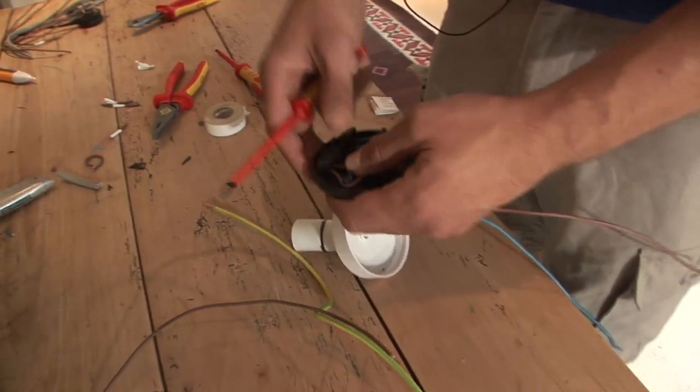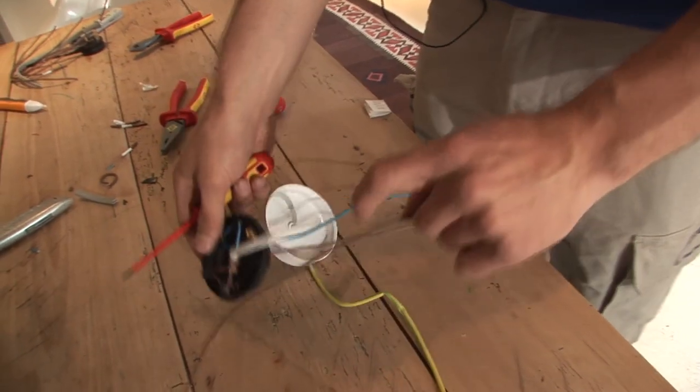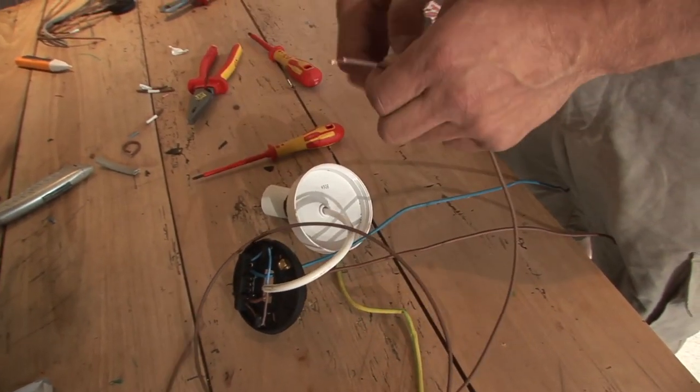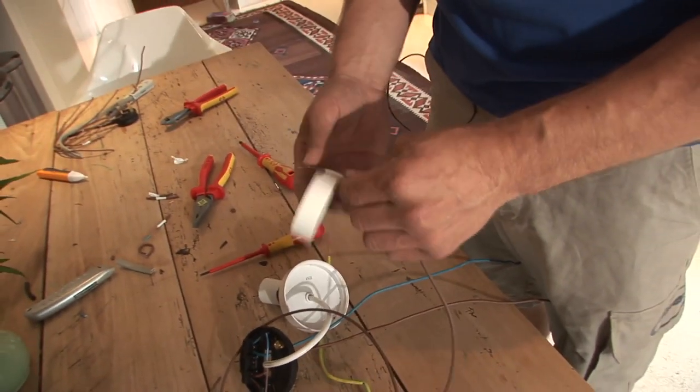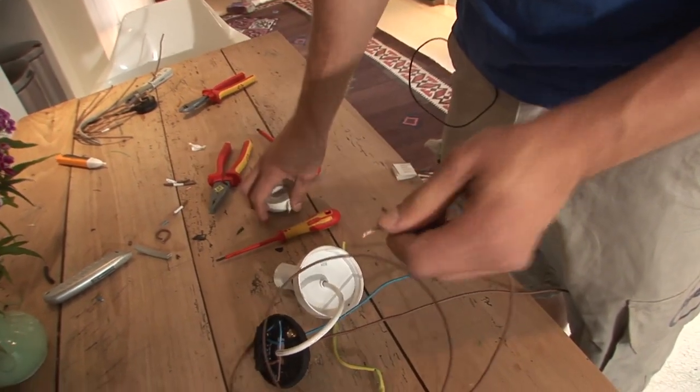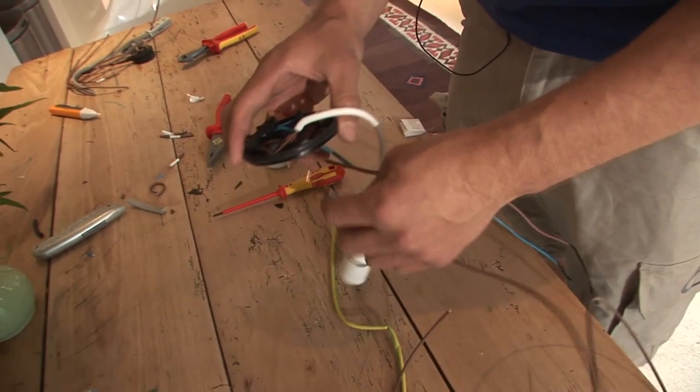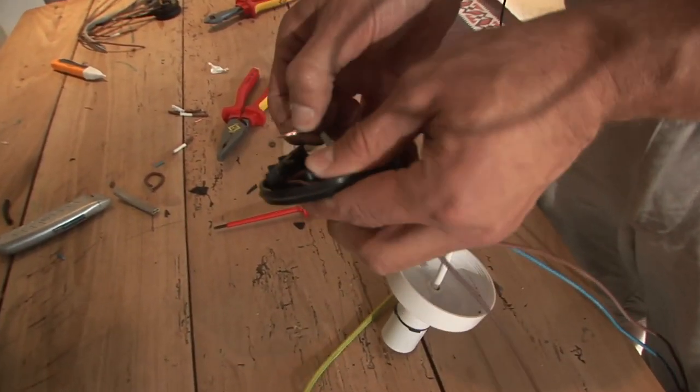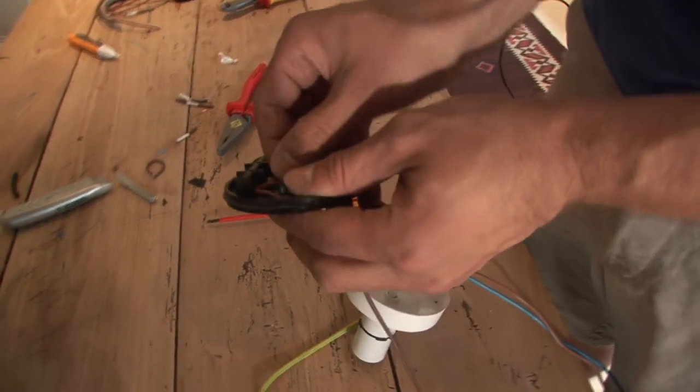Then we'd have the permanent live. This just loops in and loops out. We tend to label it with a bit of tape just so that we never get confused, so we'd always know that that's the permanent live. Again, like the rest, it'll just come in and go into there.